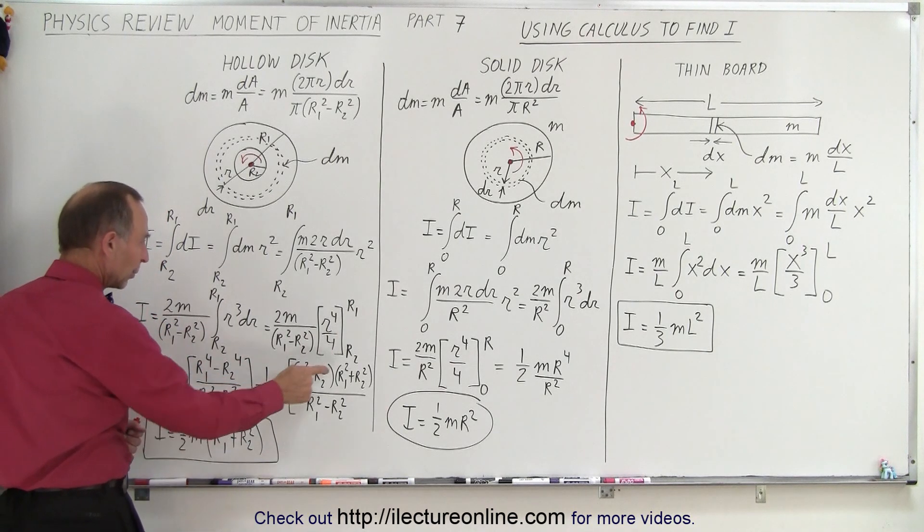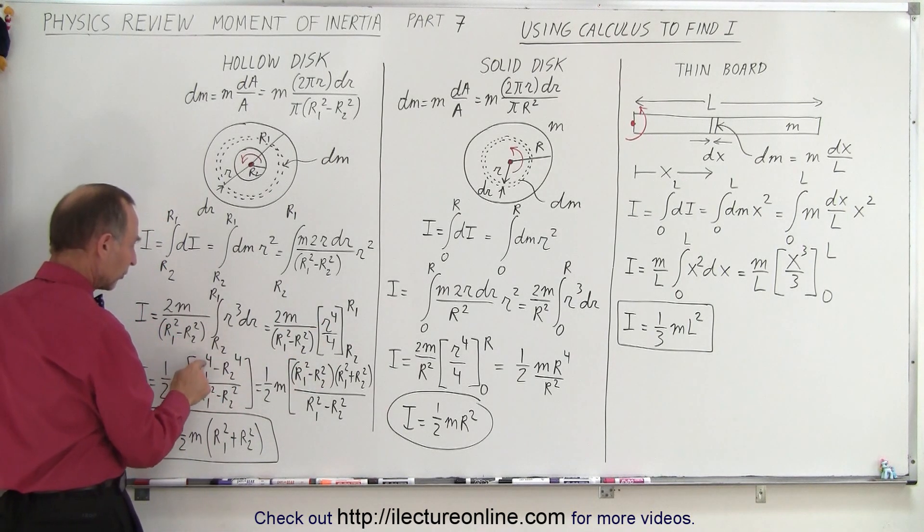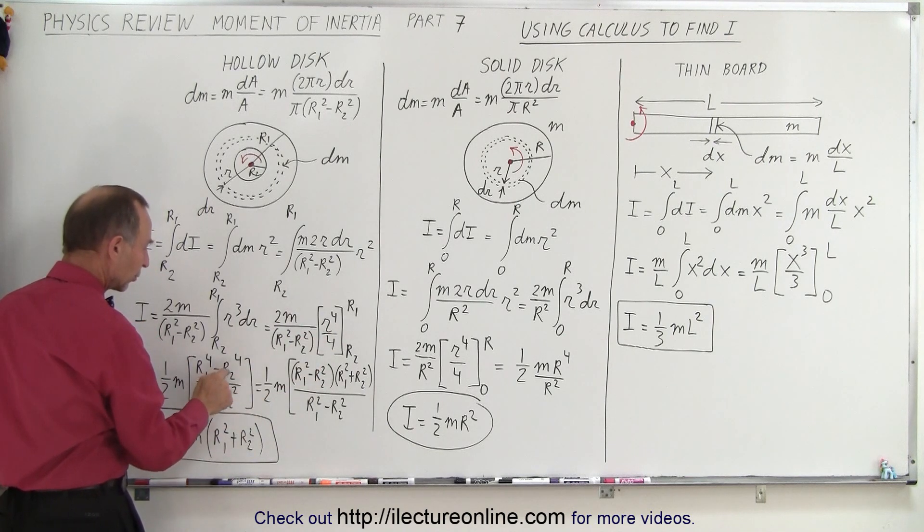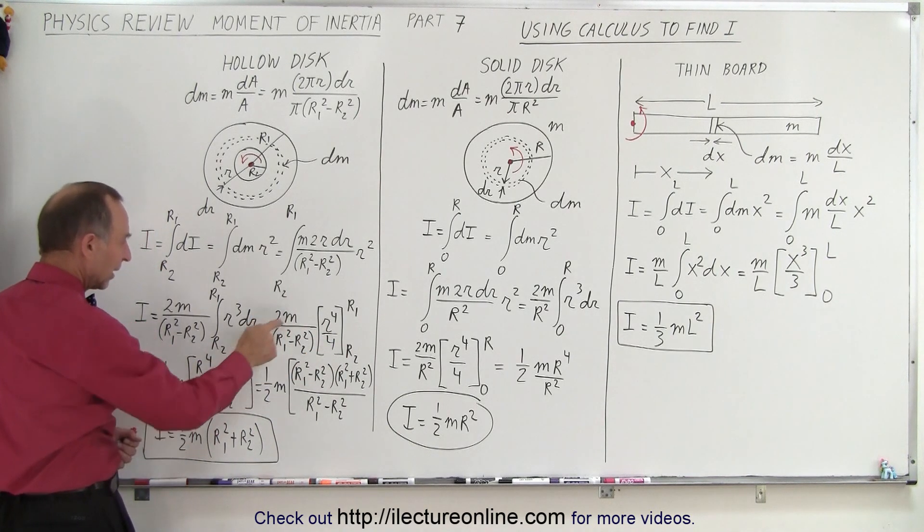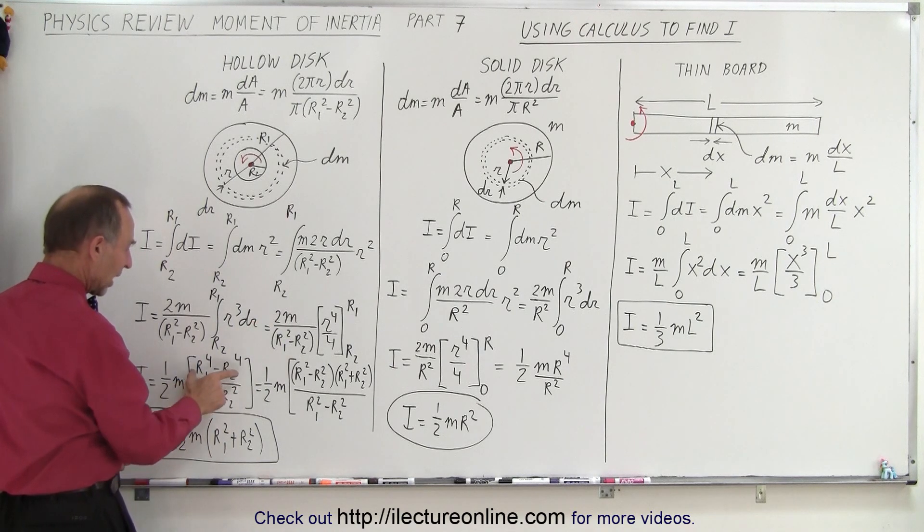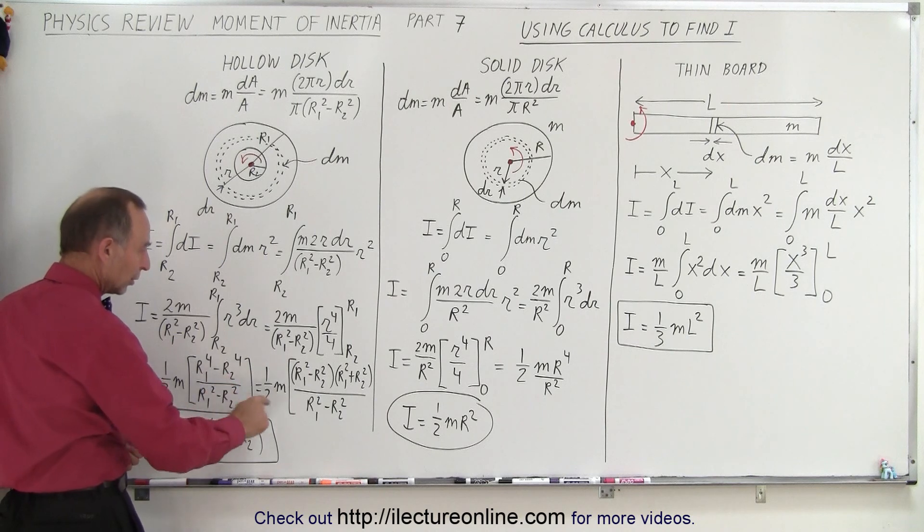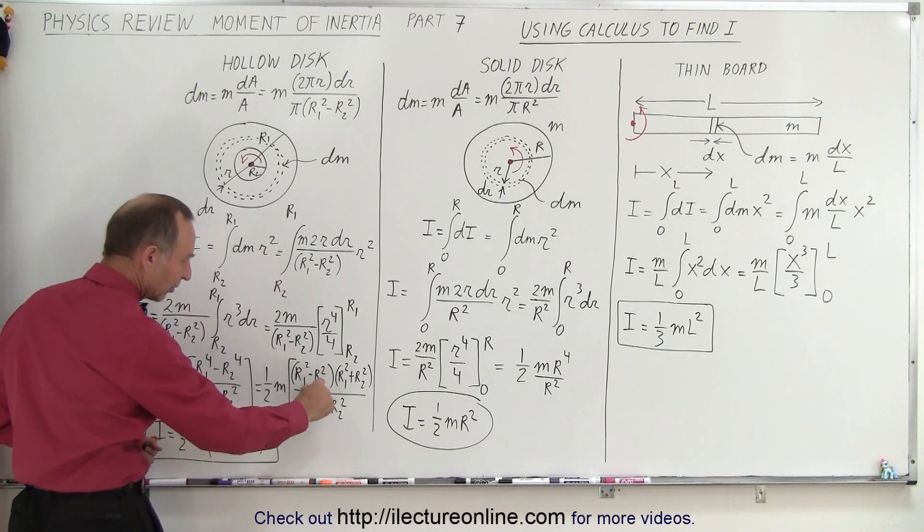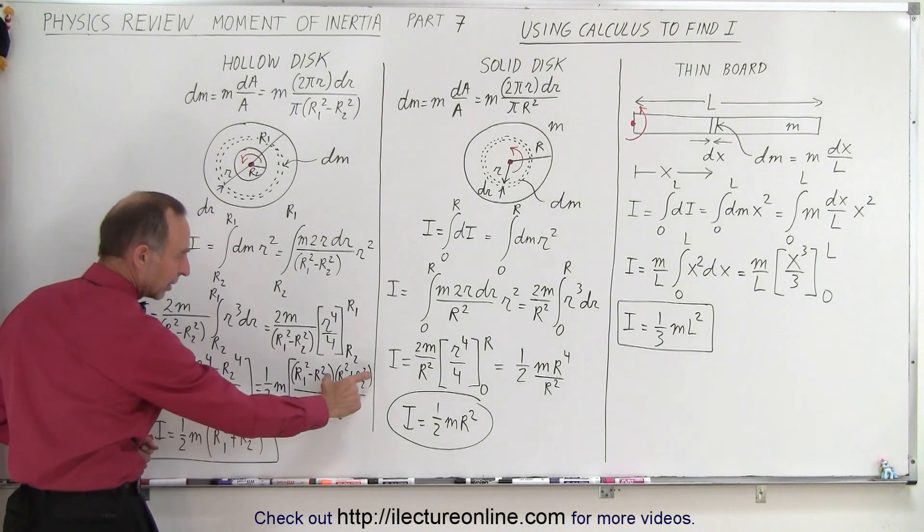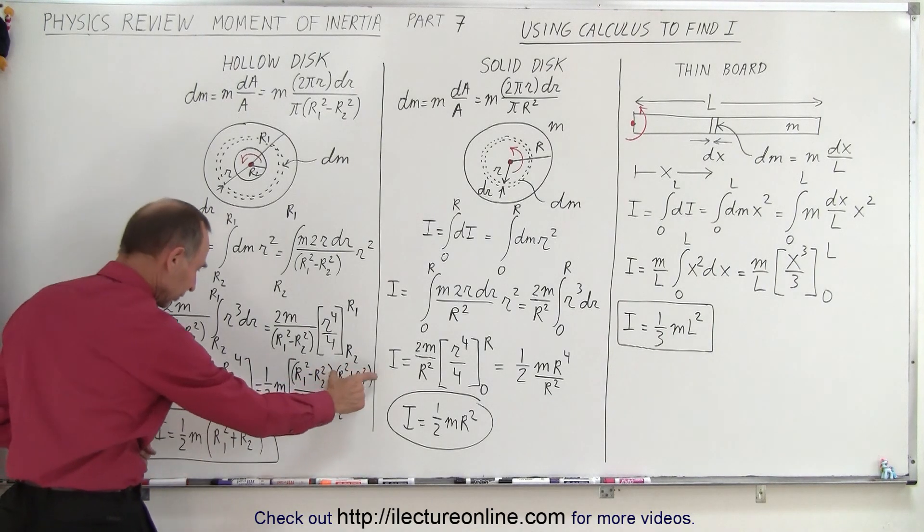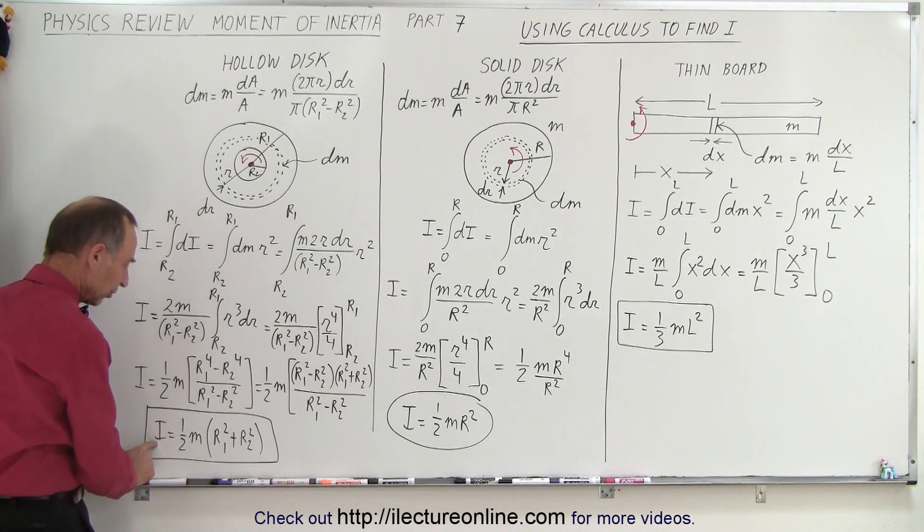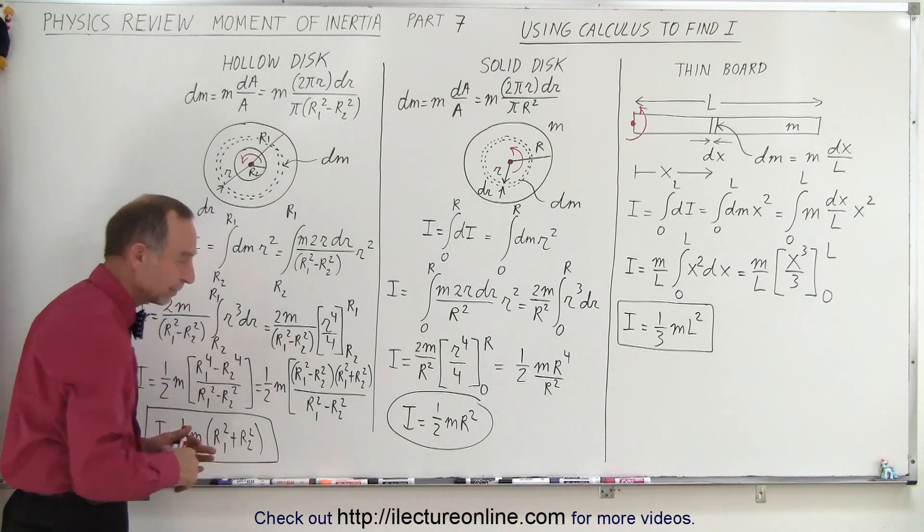So in the numerator, we end up with, when we plug in the upper limit, we get r1 to the 4th minus, plug in the lower limit, r2 to the 4th. Of course, the 4 comes out. 2 divided by 4 is 1 half. m survives. And now we have this divided by that. Now if we factor the numerator, notice we end up with this expression where this cancels out with the denominator, and we're just left with this portion right there, that factor. And so therefore, the moment of inertia is 1 half m times r1 squared plus r2 squared.